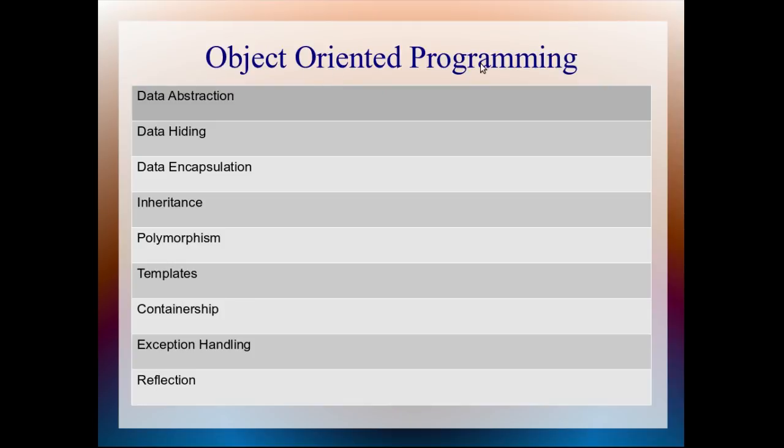Object-oriented programming is the superset of object-based programming. Apart from the above three, you have this much of properties also. We have seen these three. Inheritance means relationship between classes, parent-child relationship between classes.